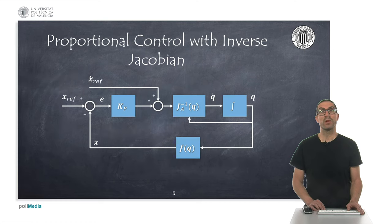The structure of this controller using the inverse of the Jacobian is shown in the figure. As it can be seen, it requires the trajectory and its derivative as a feedforward term. These trajectories can be obtained from the trajectory generator, as we discussed in a previous video.